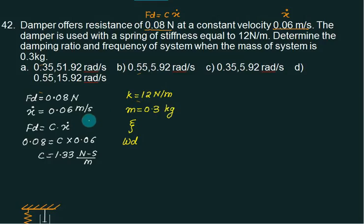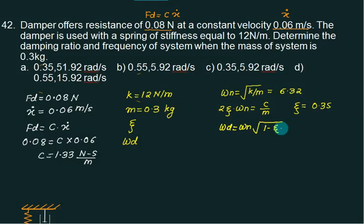So write the first equation and second equation and compare. You will get omega n equals to K by m. Then we have 2 zeta omega n equal to C by m. So check zeta equals to 0.35. Omega d equals to omega n under root of 1 minus zeta square. Check answer 5.92 radian per second.